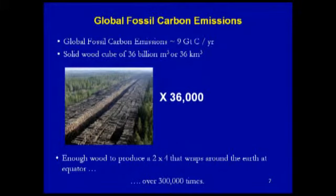To put this into context with global fossil carbon emissions: in 2010 they were estimated to be about nine gigatons of carbon from the burning of fossil fuels — carbon stores geologically isolated deep underground that we extract and burn in the form of petrol, diesel, LPG, and oil. If we wanted to absorb that amount of emission into wood we'd have to generate 36 billion cubic meters — or 36 cubic kilometers — of wood every year, or we'd have to sequester that amount into that large pile of wood 36,000 times every year, or produce a two-by-four that wraps around the earth at the equator over 300,000 times every year.